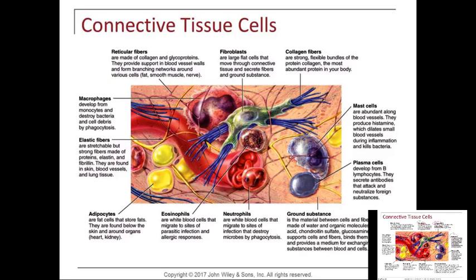Plasma cells develop from B lymphocytes and secrete antibodies. Neutrophils are white blood cells that migrate to the site of infection and destroy the microbe through phagocytosis. They're the first to arrive and try to clear out the debris. Eosinophils are also white blood cells — these typically increase when there's either a parasitic infection or some sort of allergic response.